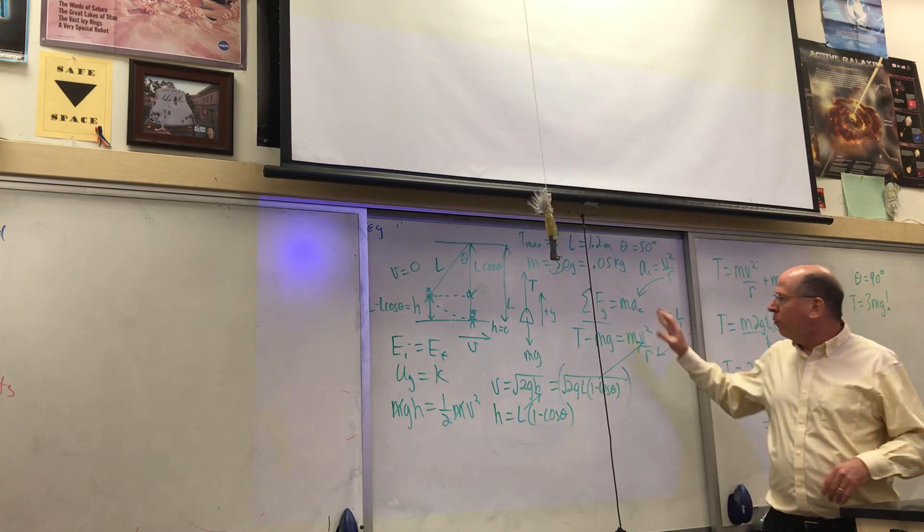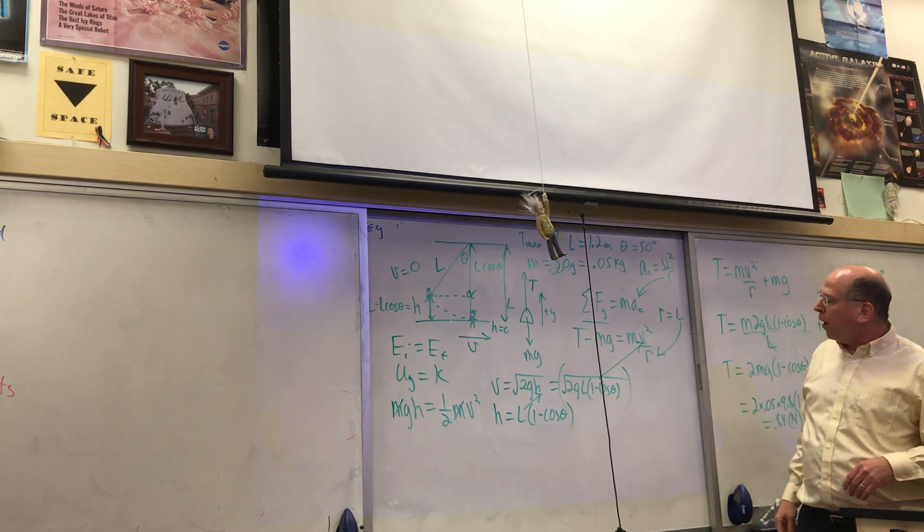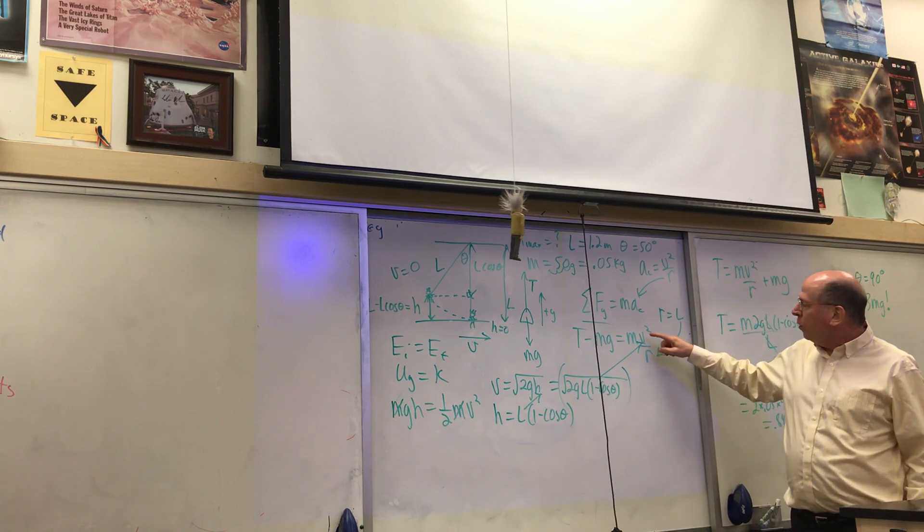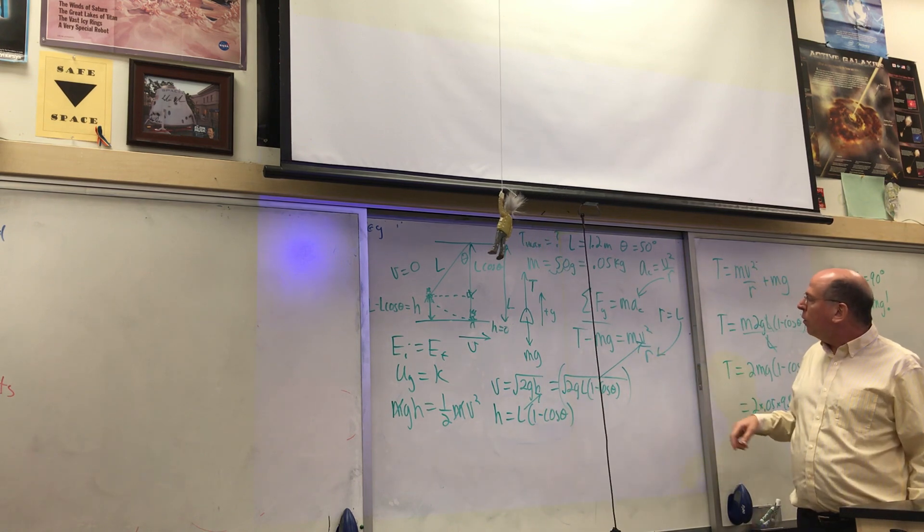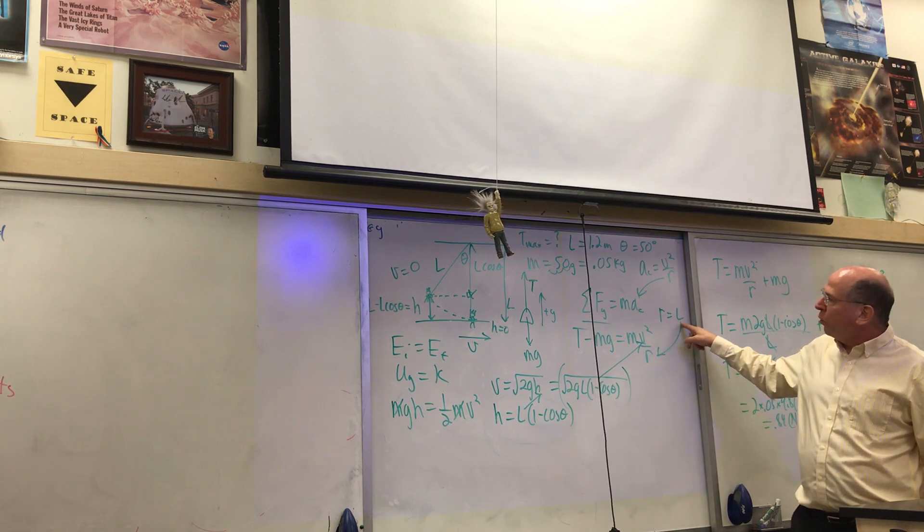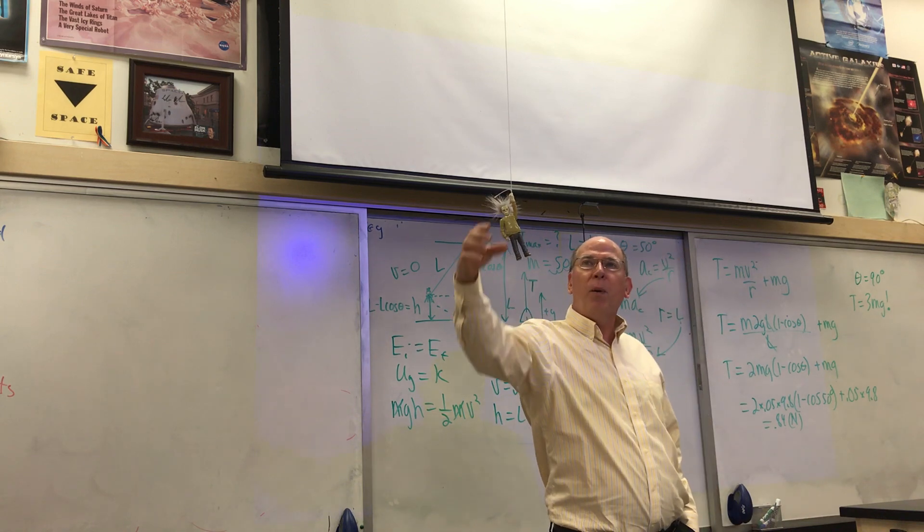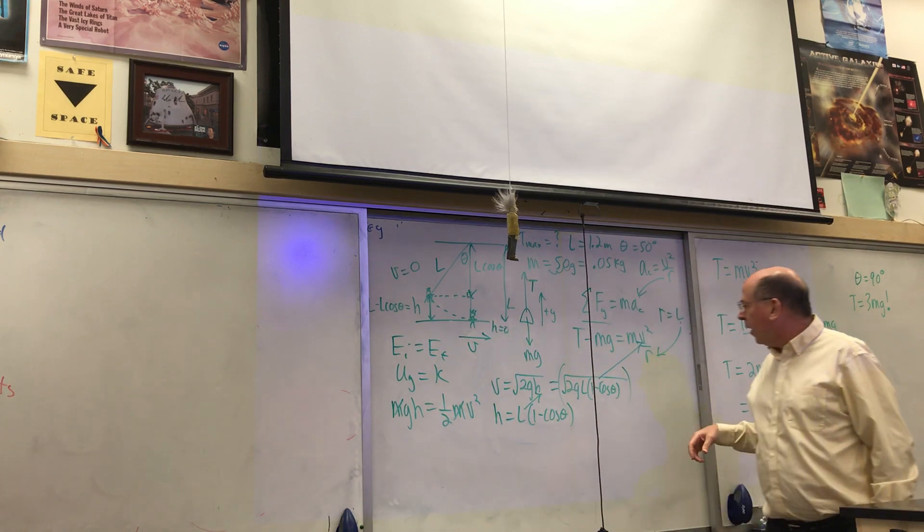So free body diagram, Newton's laws, and then we find out that we don't know the speed or the radius either. The radius is just the length of the vine, which is given and would be measured to Tar-Stein's belly button.